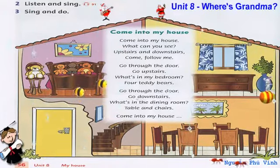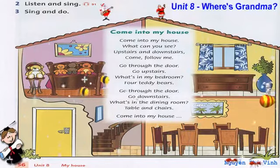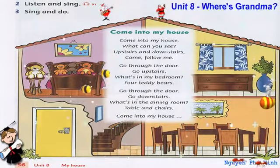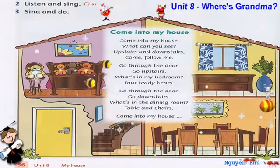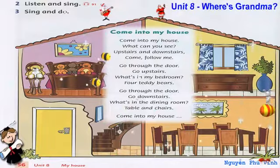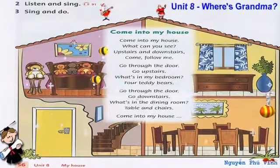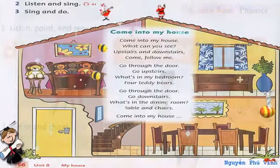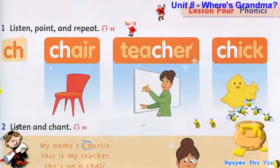Come into my house. What can you see? Upstairs and downstairs. Come follow me. Upstairs and downstairs. Go through the door. Upstairs and downstairs. Listening 92.